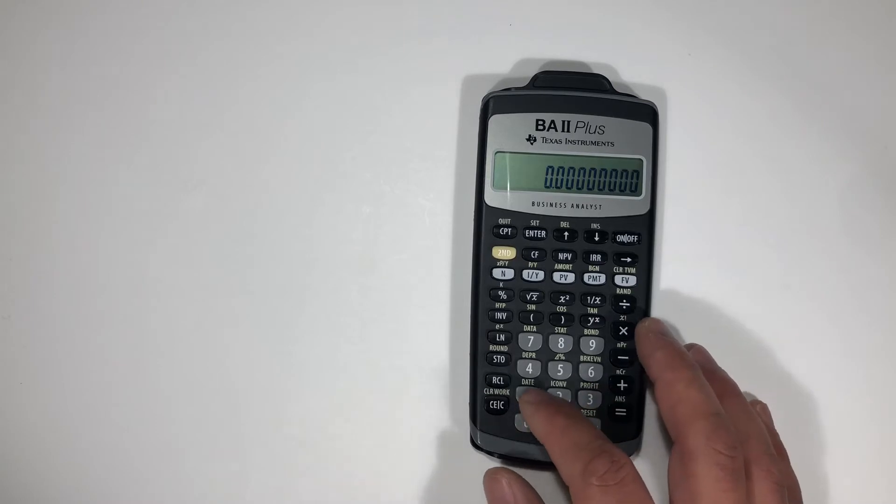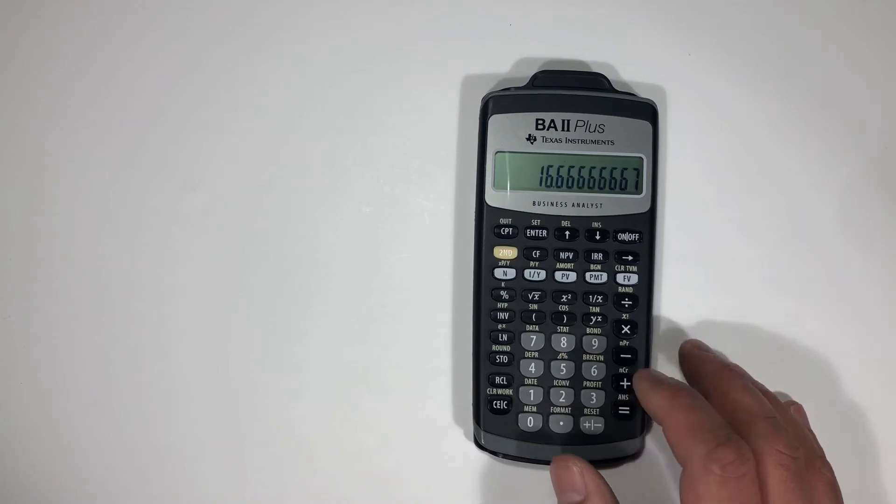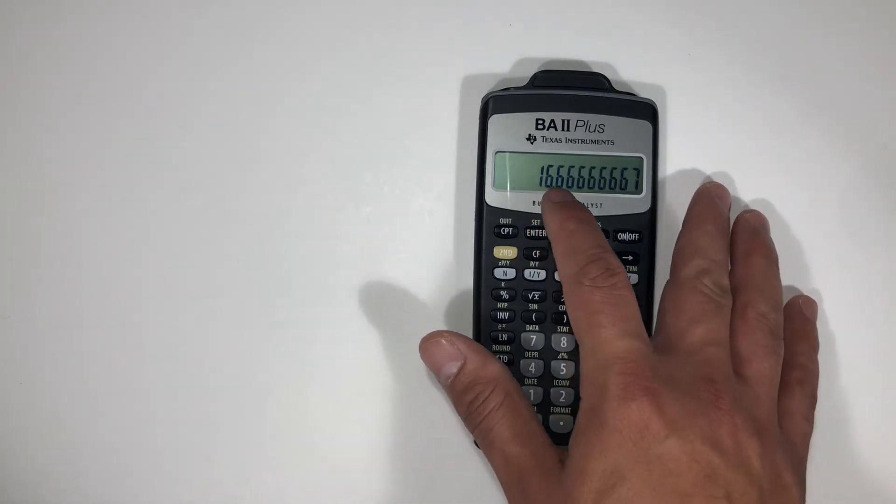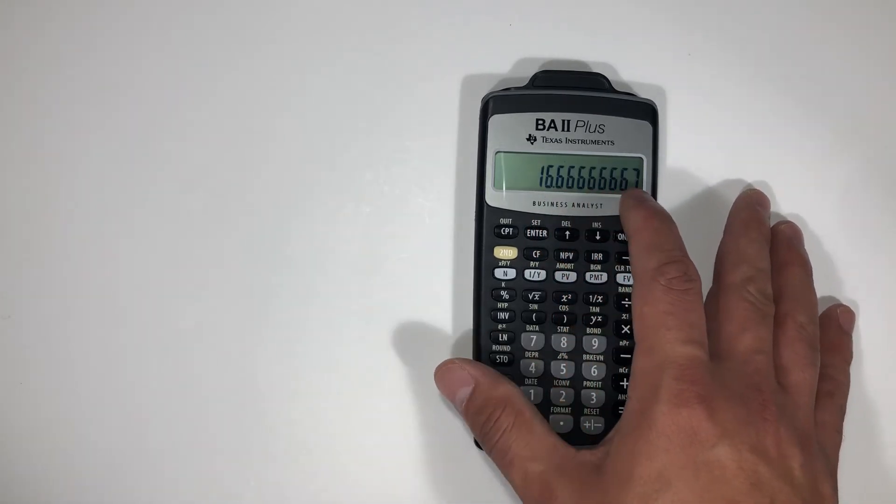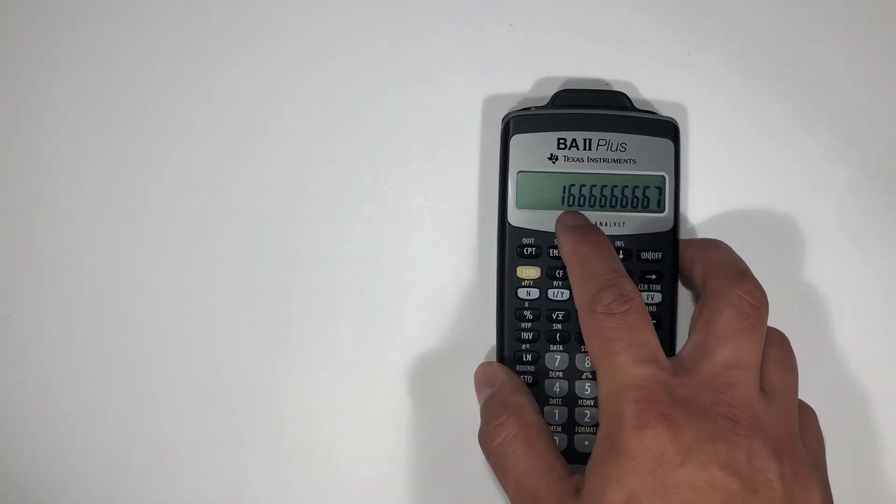So now let's go 100 divided by six. So now you have a higher degree of accuracy going all the way down. So the more digits you have displayed, the more accurate your answer is going to be.